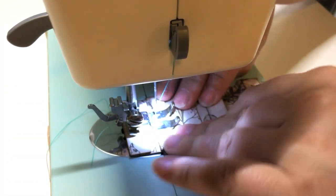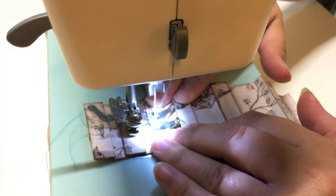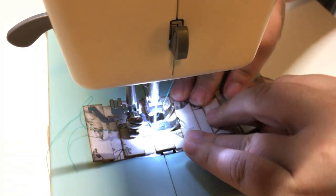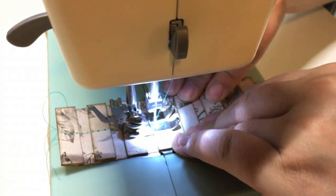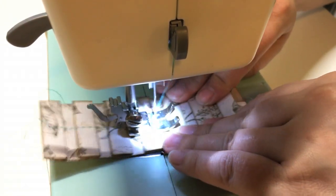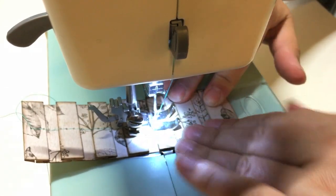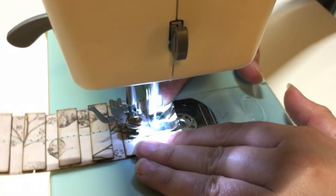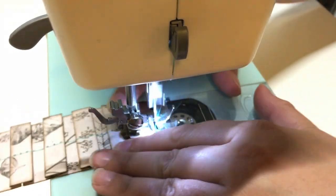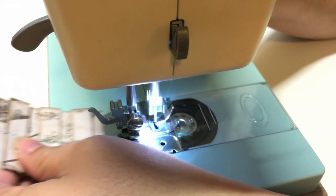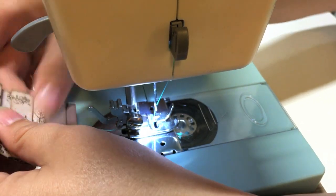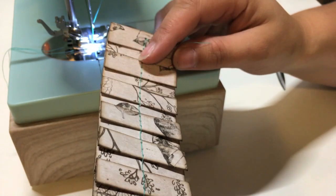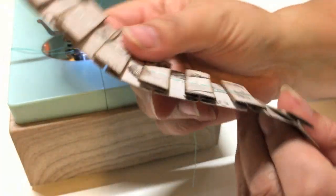As you sew this together just kind of stop, stick your pleats together the way they should go and then feed it through the machine and just keep doing that until you get all the way down your strip. Here you can see what that box pleat looks like and that great dimension it gives you.